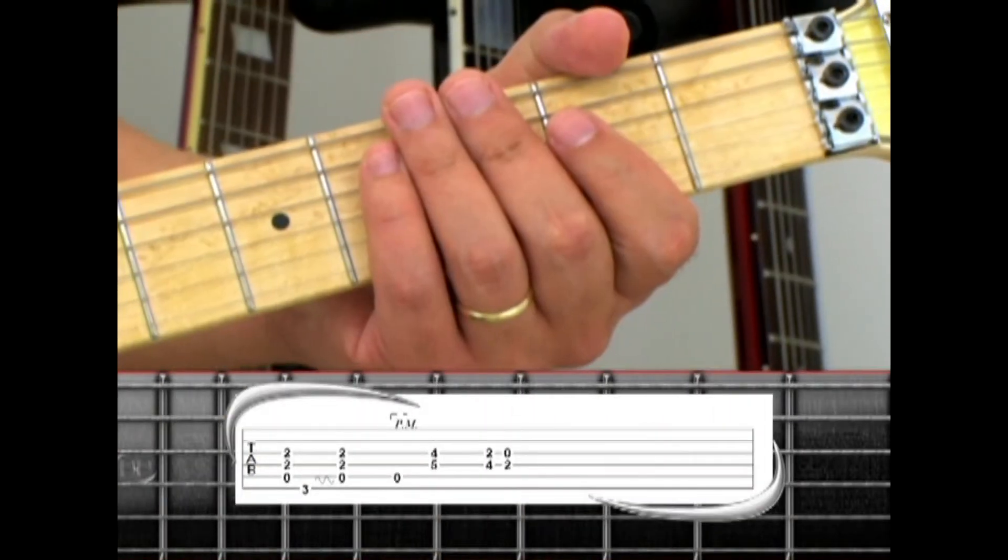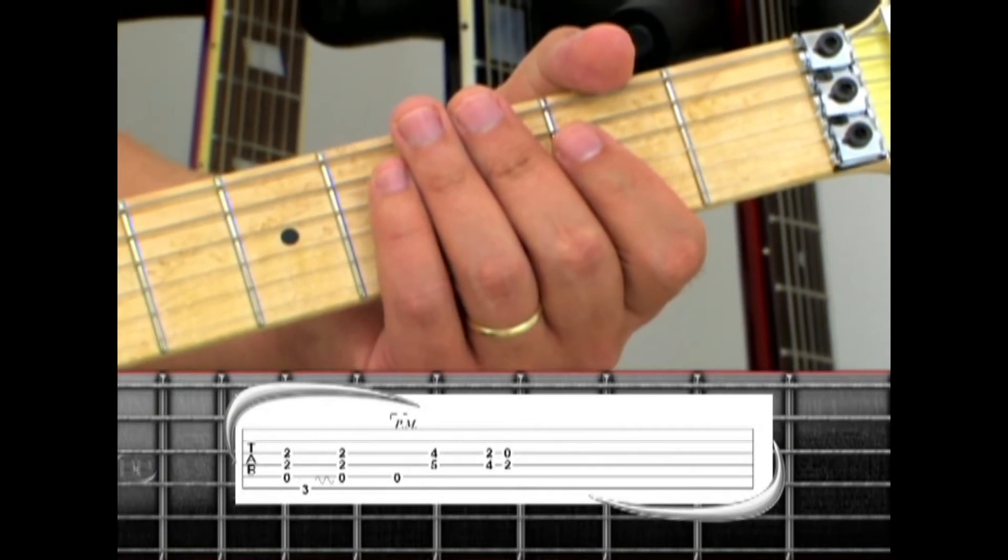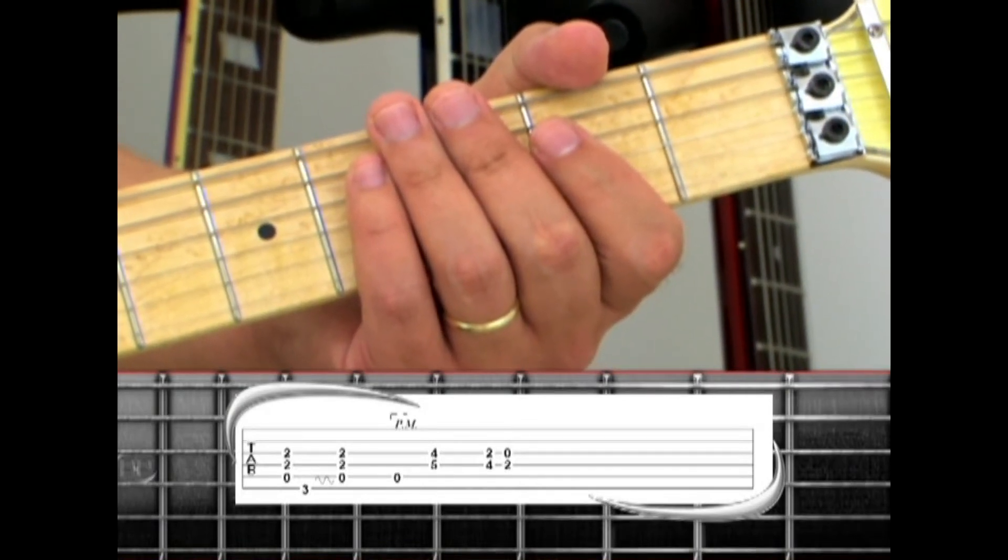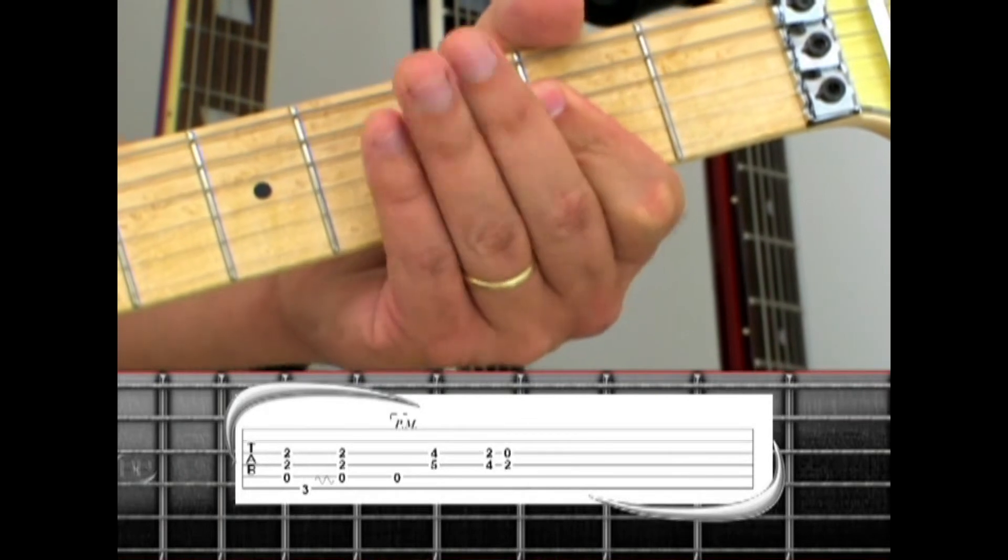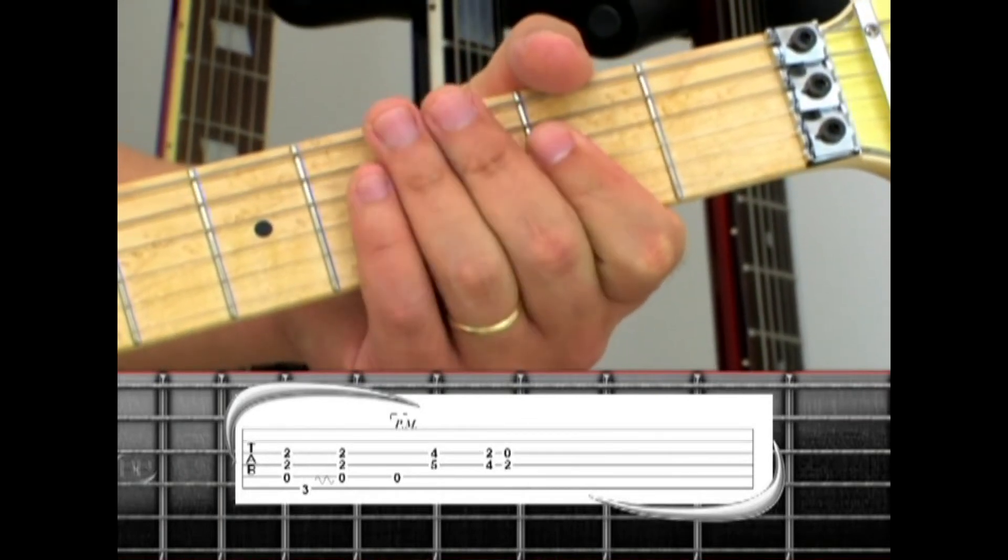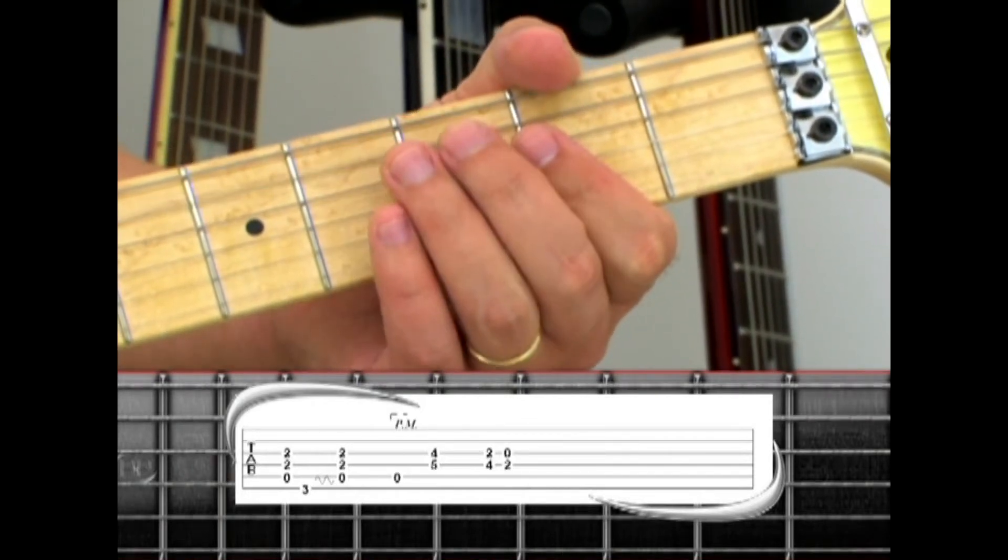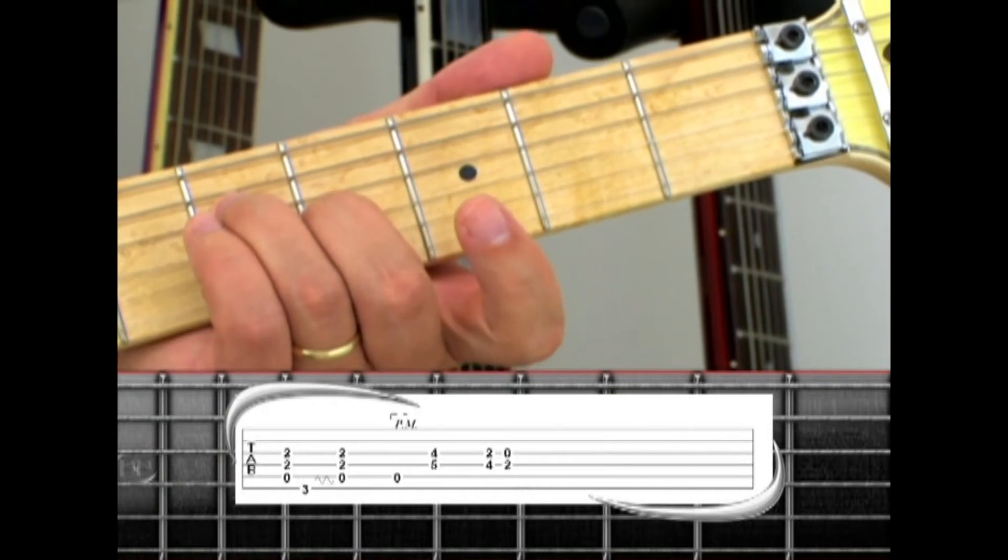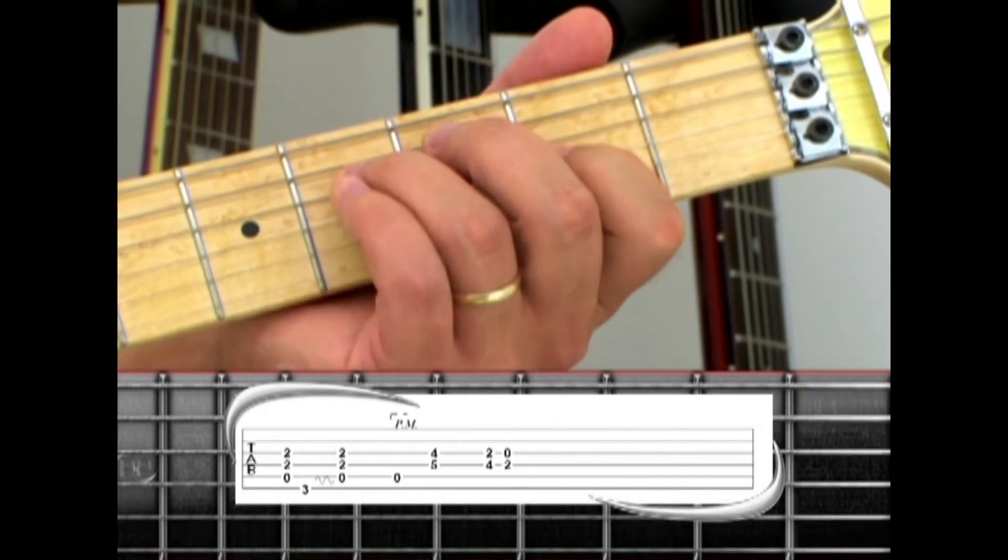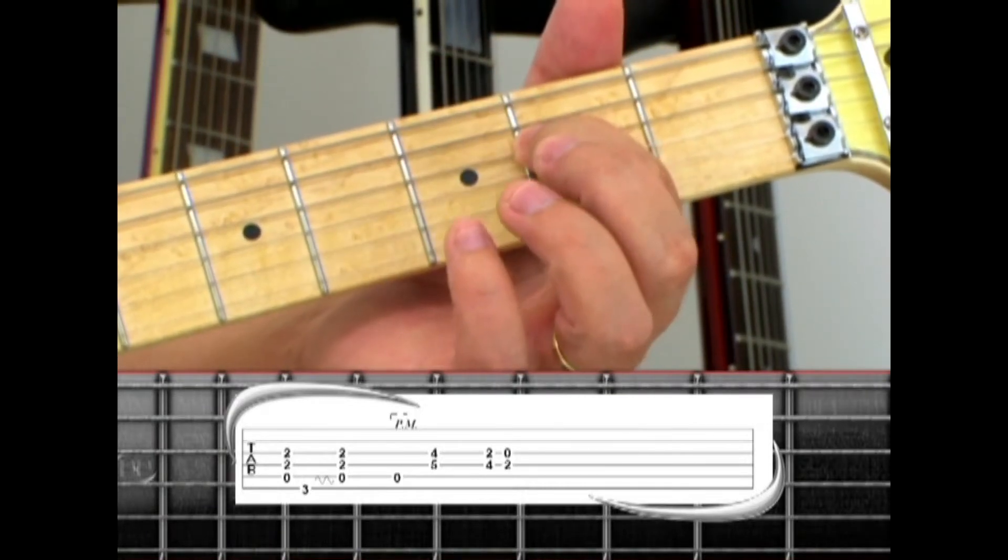The second part of the verse uses the same chords, but with a slight variation for the timing. A5, G, A5 is the same. The open A to partial G is the same, but the F sharp minor to E minor is a quicker change.